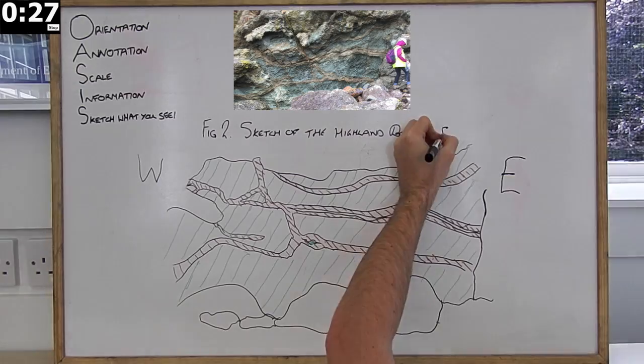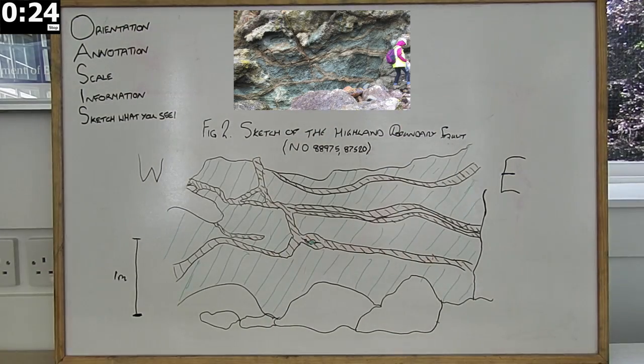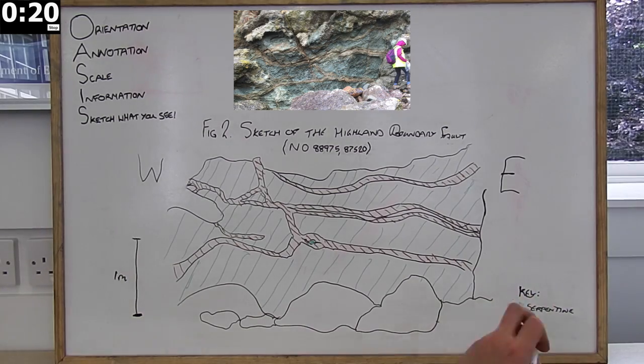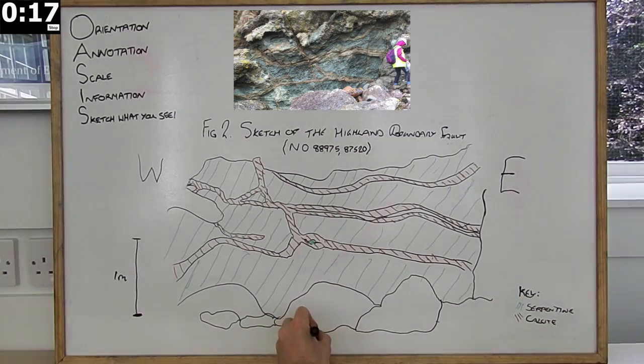All sketches should have a title describing what is being drawn and the location. A scale should be added which can be measured accurately using rulers or tape measures, or estimated using an object of known height for reference, for example a person.